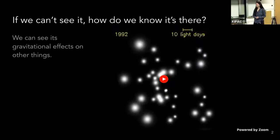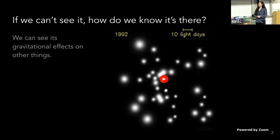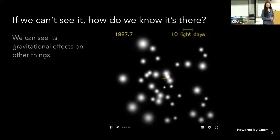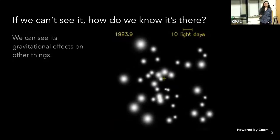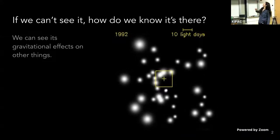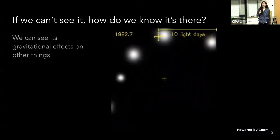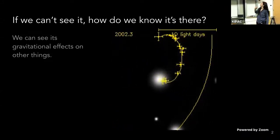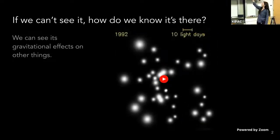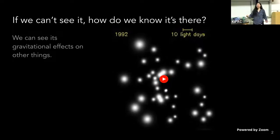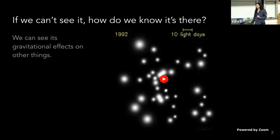Dark matter is something dark, which means we can't see it — but if we can't see it, how do we know it's there? Well, we can see its interactions with the things around it. For example, here are stars moving around in our galaxy. Even though we can't see anything in the middle of the trajectory of that star, we can have a sense that there is something there. In this case it's a black hole, but with dark matter we similarly see an effect.